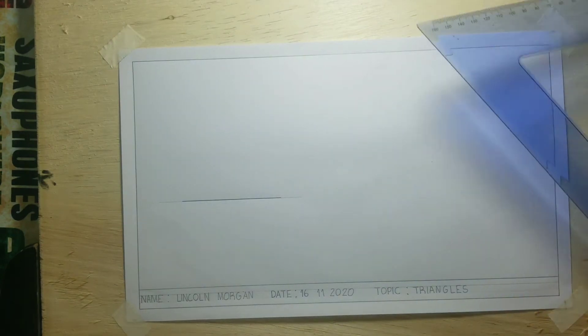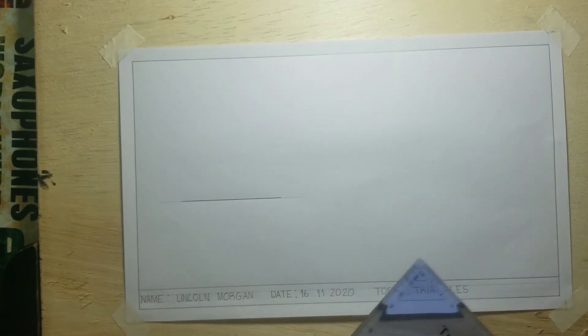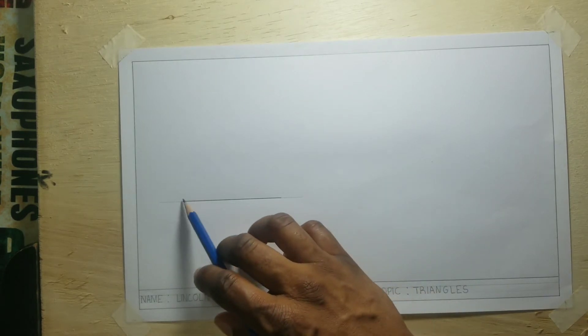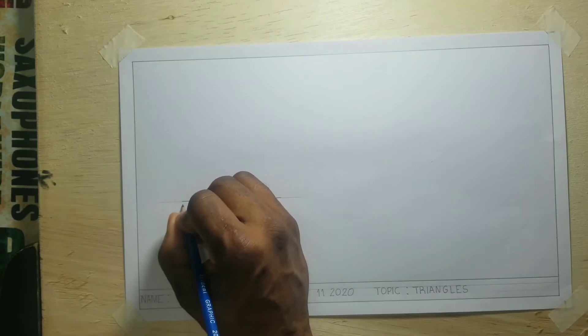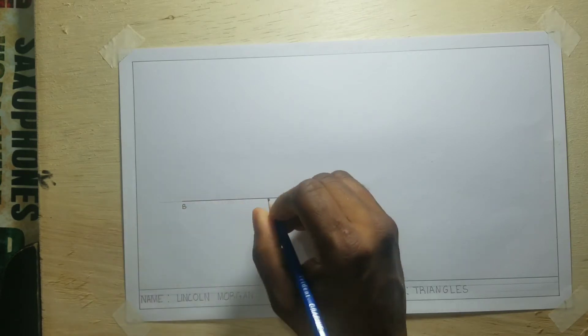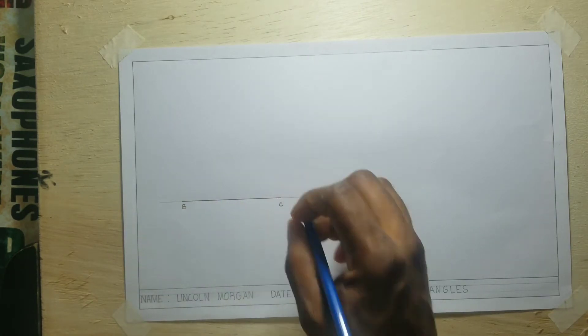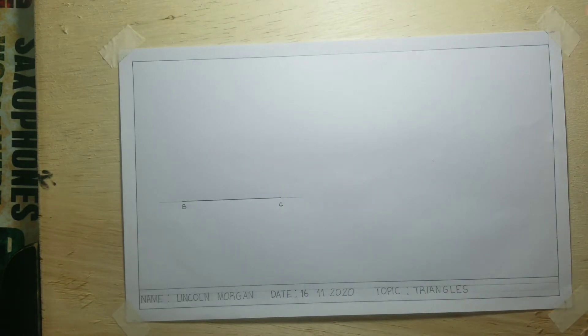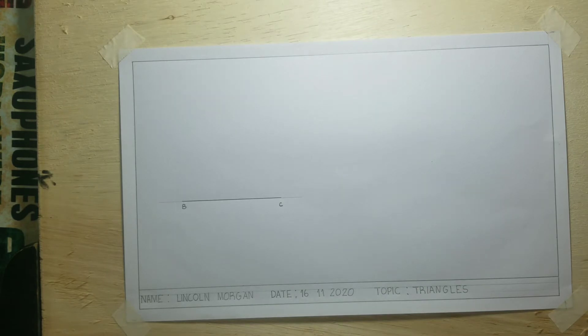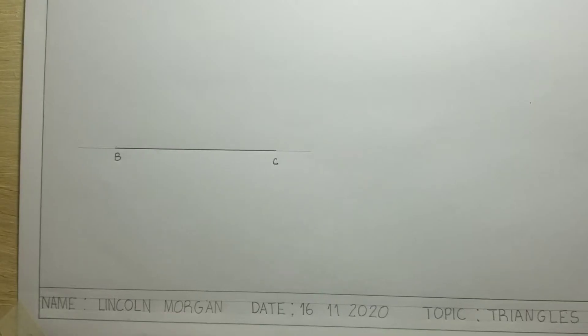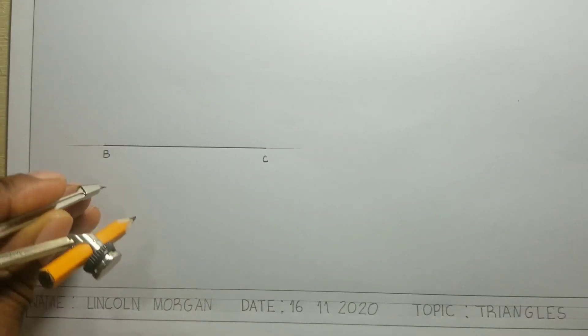Now the angle given is a 45 degree angle from B. In order to get the 45 degree angle, I will construct a 90, then bisect the 90 degree angle to get my 45 degree. Put your compass at B and construct a semicircle from the BC line.